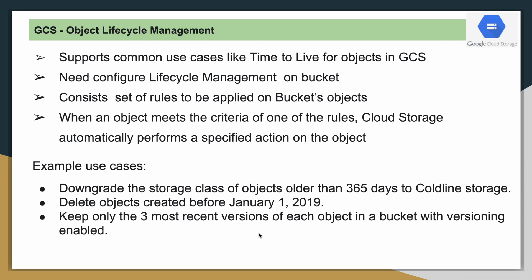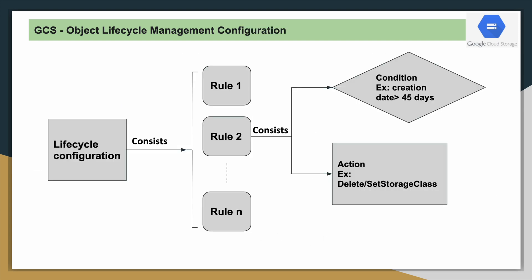You can maintain different versions for an object. If you want to preserve the three most recent versions of the object, you can set that condition. Extending our discussion on configuration: at a high level it consists of a set of rules, and each rule has two things — one is a condition and the other is an action. A condition can be, for example, the age of that object.